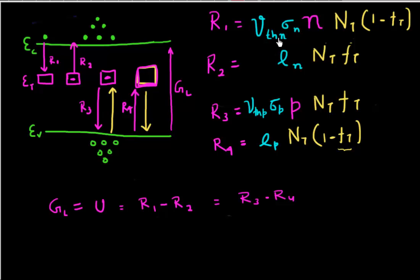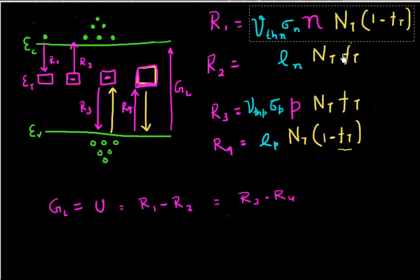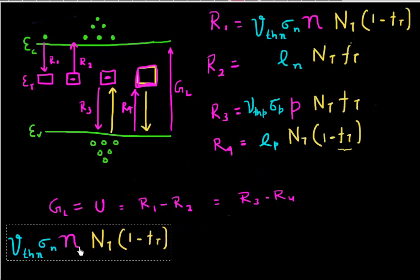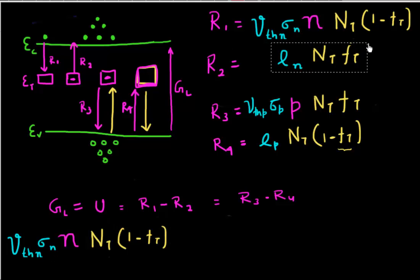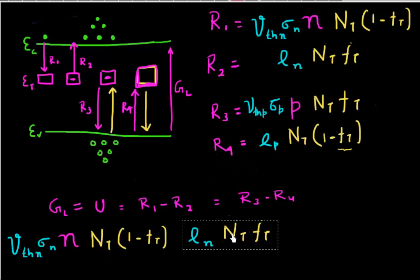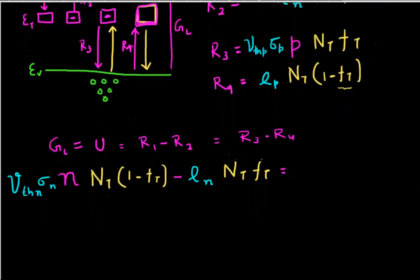Now I'll take the values of the different rates derived in the last video and put them into this equation. I select the value of R1 and subtract R2 from it. So R1 minus R2 should now be equal to R3 minus R4.